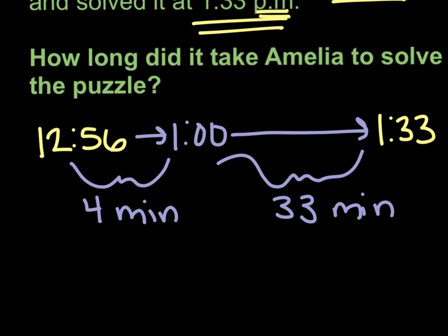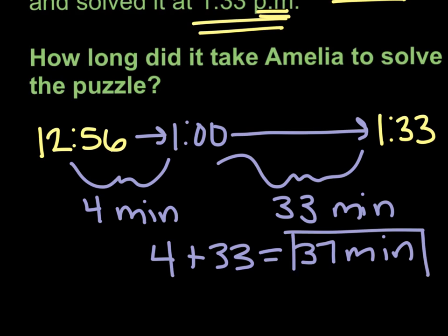So Amelia worked for four minutes plus another 33 minutes after 1 o'clock. She worked for four minutes before 1, 33 minutes after 1. So she worked for a total of 37 minutes on her puzzle before solving it.